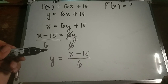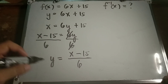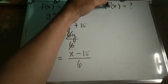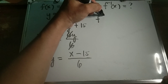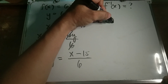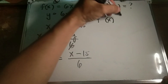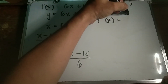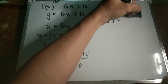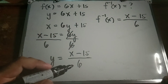Now after we solve y in terms of x, replace y with the inverse function notation, f⁻¹ of x. We've managed to find the inverse at this point, so f⁻¹ of x equals x minus 15 over 6. And that's it.